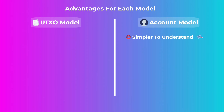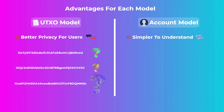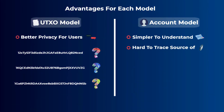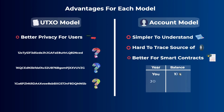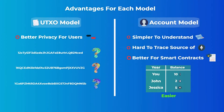Let's talk about some advantages of each model. The account model is much simpler to understand for normal users, as people tend to imagine their coins as balances in accounts rather than sums of unspent outputs. When it comes to privacy, the UTXO model has an advantage — new anonymous change addresses are created and can be hard to link to a known owner, although advanced chain analysis techniques can do it. The account model makes it harder to trace the source of a specific Ethereum coin. Regarding smart contracts, the account model is better, as it is easier for developers to work with accounts and balances rather than unspent outputs — though Cardano is an exception, using smart contracts with a UTXO model.